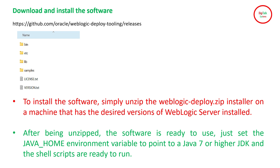To install, simply unzip the weblogic-deployer.zip installer on the machine that has the desired version of WebLogic Server installed. You need to install it on both the source and target — on the source to run the export and on the target to run the import. After unzipping, the software is ready to use. Just set the JAVA_HOME environment variable to point to Java 7 or higher JDK and the shell scripts are ready to run.